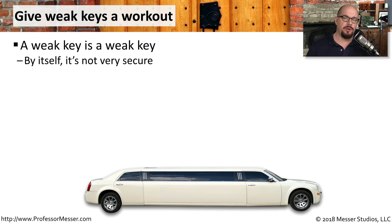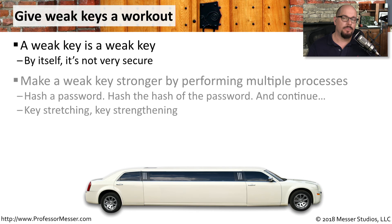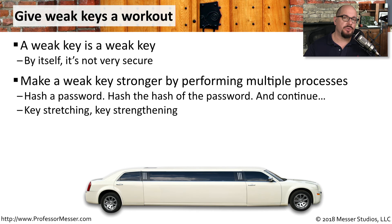When we're implementing encryption in our applications, we may find that the encryption method in use is using some very short keys. As we are aware, shorter keys generally mean a weaker form of encryption. One way to use a stronger type of encryption using a weak key is to send it through multiple processes.